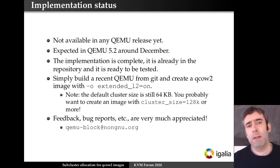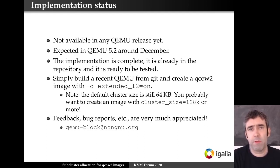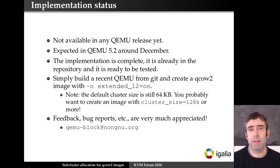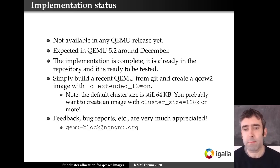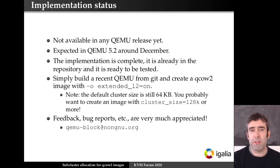How do you try this? This is not available in any QEMU release yet — it will probably be available in QEMU 5.2 — but the feature is complete, already in the repository, and you can test it now. Download the latest version from Git, compile it, and create an image with the option extended-L2 enabled. You also probably want to use a larger cluster size, since with this feature it makes sense. Feedback and bug reports are very much appreciated — the feature is complete but new, so any testing, suggestions, etc. — write to the mailing list or contact me directly.